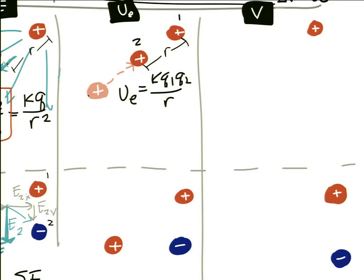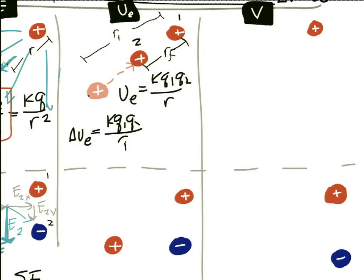Often with electric potential energy, you want to know not just its value but the difference between two configurations — between an initial radius R_i and a final radius R_f. The change in potential energy is ΔU = KQ1Q2/R_initial − KQ1Q2/R_final.